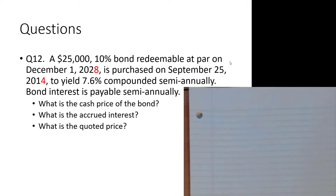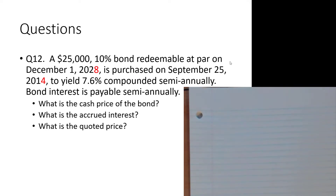Finding the cash price is where all the work happens — that's where all the heavy lifting occurs. To calculate the cash price requires us to use almost every component of finance math we know: we have to work with an annuity, compound interest, and the days-between-dates calculation. We bring all of that together in one problem.